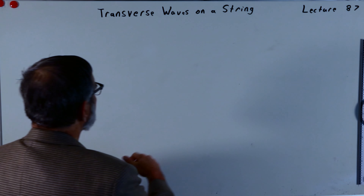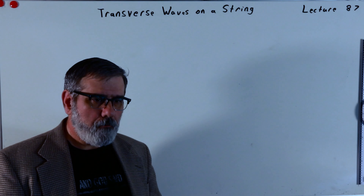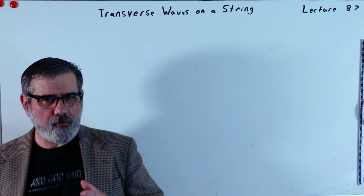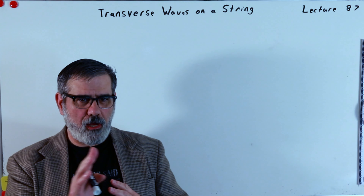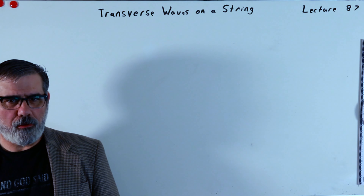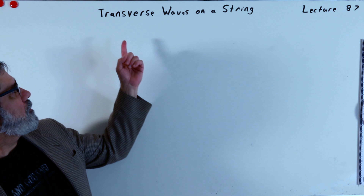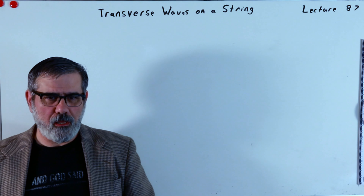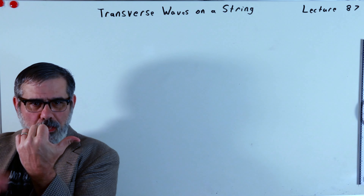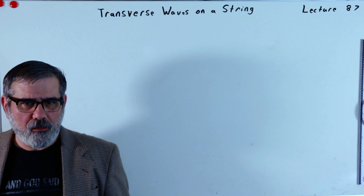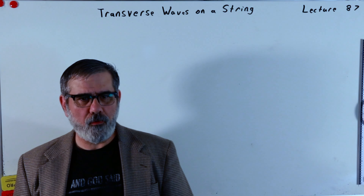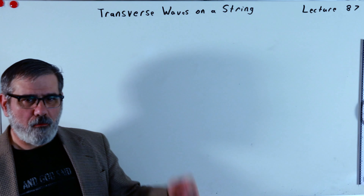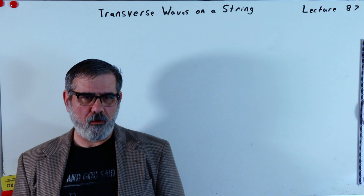For starters, what does transverse wave mean? There are generally two types of waves: transverse waves and longitudinal waves. In longitudinal waves, the motion is in the direction of the wave velocity — that's what we'll study when we look at sound waves, for example. In transverse waves, the motion is perpendicular to the direction of the velocity. So if the wave velocity is going this way, the motion of the wave is going up and down. Lots of waves are transverse waves — water waves, the waves on the guitar, waves on a string in general, and light waves.